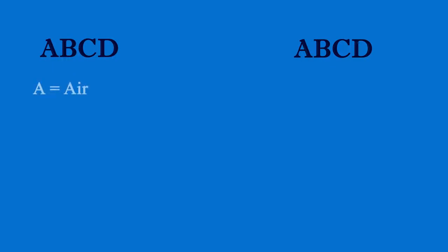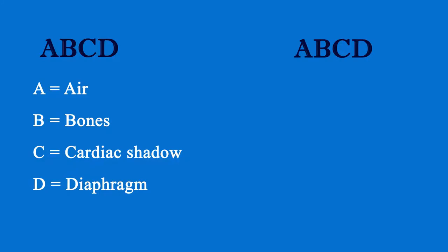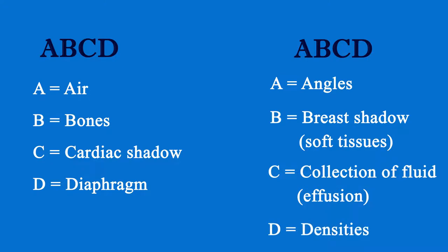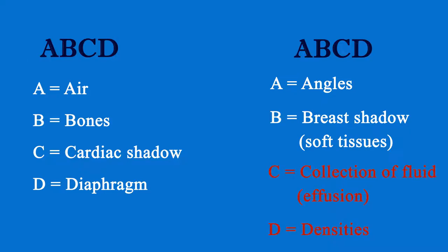To read any x-ray, we have covered four basic steps in our previous video, and you can apply those steps while reading a chest x-ray. For convenience, we have come up with a simple mnemonic: ABCD, ABCD. A is for air, B is for bones, C is for the cardiac shadow, and D is for the diaphragm. The second A is for angles, B is for breast shadow or soft tissue shadows, C is for collection of fluid or effusions, and D is for densities like foreign bodies, tumours, or enlarged lymph nodes. Note that the second C and D — collection of fluids and densities — are abnormal findings; the remaining are normal findings on a chest x-ray.